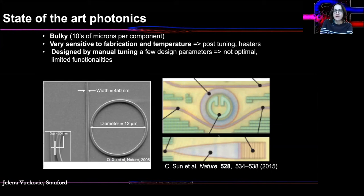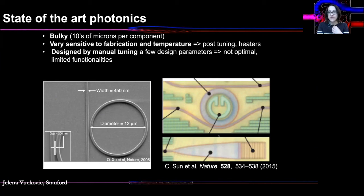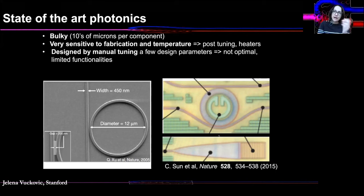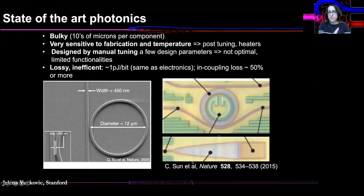These components are designed by manual tuning of a few design parameters — tweaking waveguide width and separation — but there is no reason to believe any of those are optimal because you're only brute-force optimizing with changes of a few parameters. They also have very limited functionalities. As a result, state-of-the-art photonics is pretty lossy and inefficient. Commercial photonic systems have fiber-to-chip coupling efficiencies on the order of 40%, and optical interconnect systems consume on the order of a picojoule per transmitted bit when you add up all the losses and energy consumption in tuning elements.